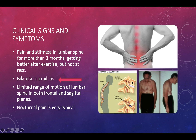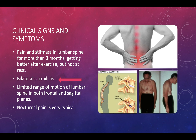A normal vertebra is separated by cartilage. In ankylosing spondylitis, a chronic inflammatory process leads to fusion of the vertebrae, making the spine more rigid with less mobility and reduced range of motion. This leads to increased curvature of the spine and a postural difference.